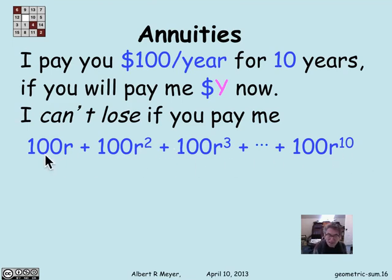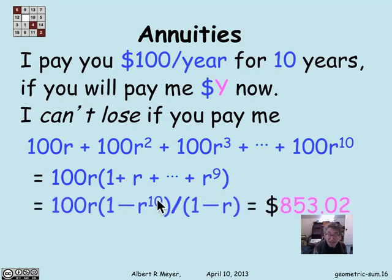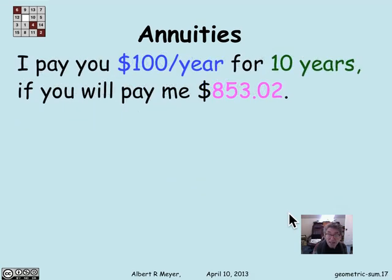Looking at this sum — factoring out 100R, we're left with 100R times the geometric sum from 1 to R to the ninth, where the base is R. We have a nice formula for that: 1 minus R to the 10th, over 1 minus R. Plugging in R equals 1 over 1.03, the conclusion is that this annuity is worth $853.02 today. My promise to pay you $1,000 spread out over the next 10 years is worth $853.02 today, assuming a bank rate of 3% per year.